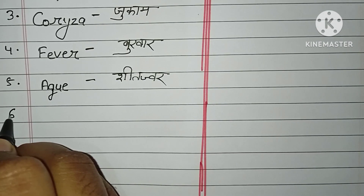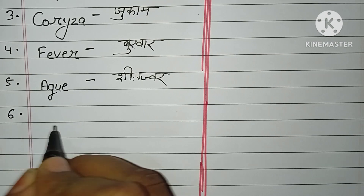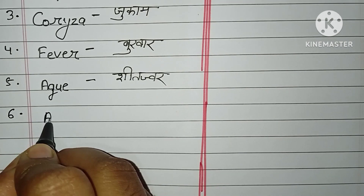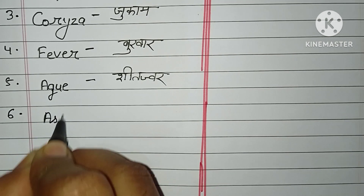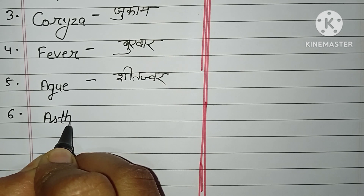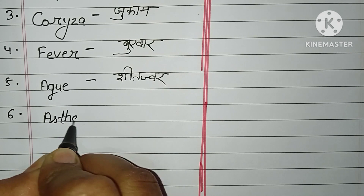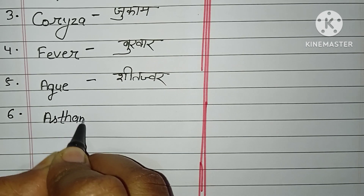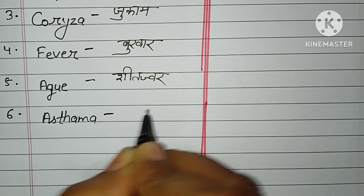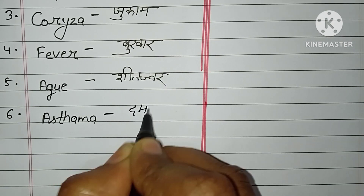Number six: Asthma. A-S-T-H-M-A. Asthma. Dama.